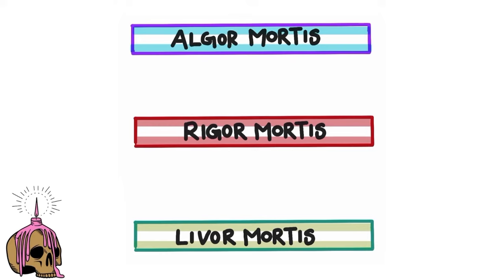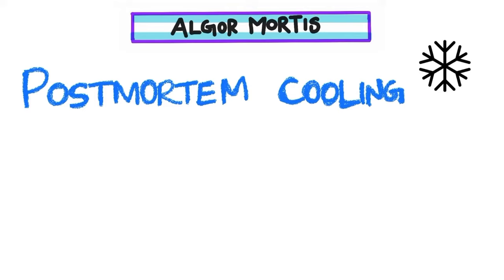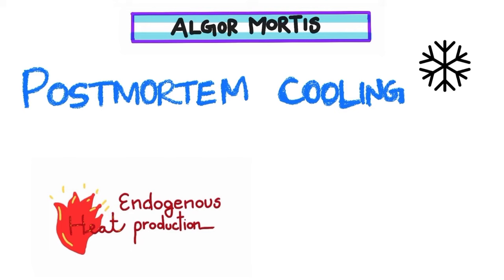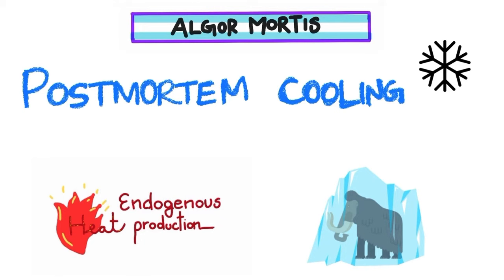Algor mortis is also called post-mortem cooling. The body's temperature starts to fall after death, but initially the body's temperature will not fall because of endogenous heat production happening in the tissues which are still alive in the body and the metabolism occurring in those tissues. Once there is complete death of those tissues, there will be decreased metabolism and the temperature starts to fall, and algor mortis starts to set in.